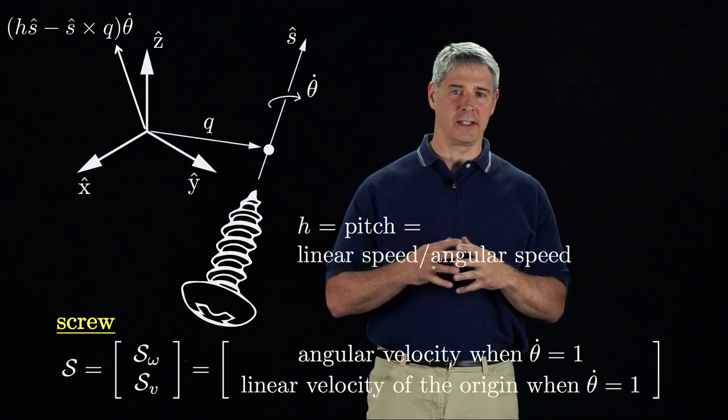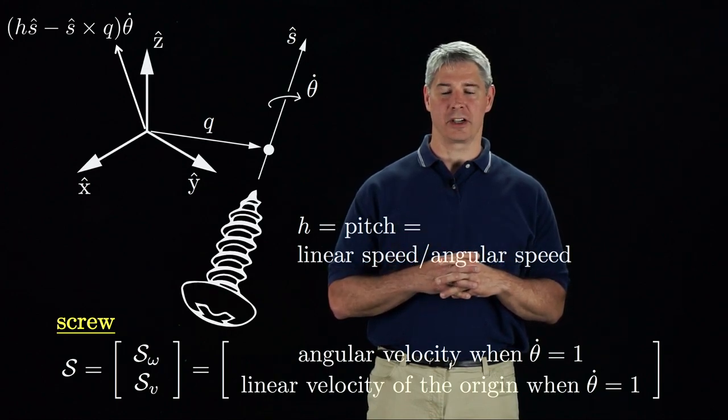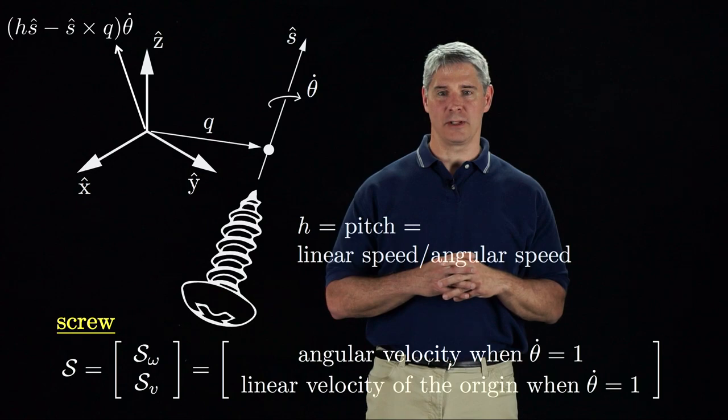The linear velocity of the origin, as you see in the figure, is a combination of two terms. H times S,